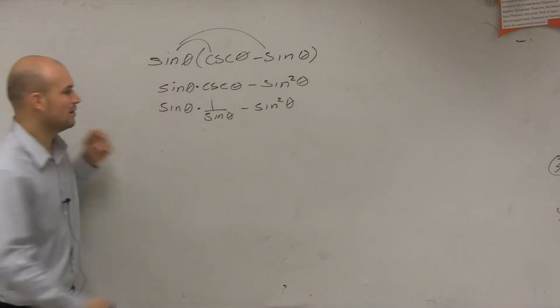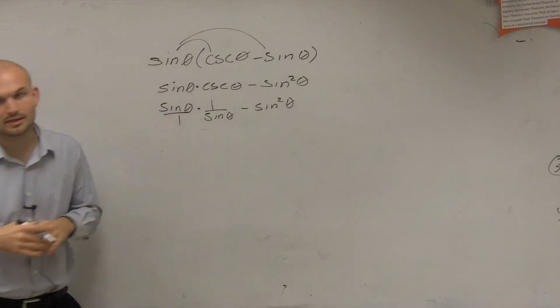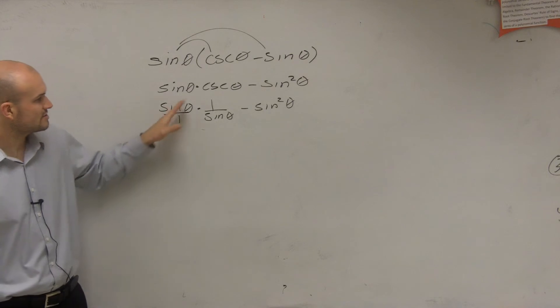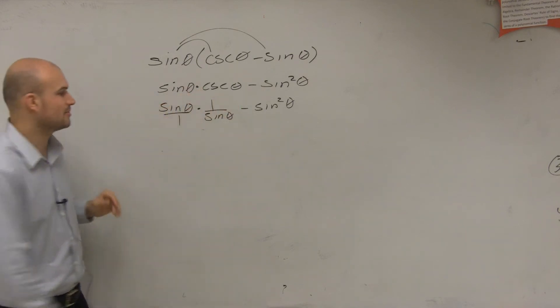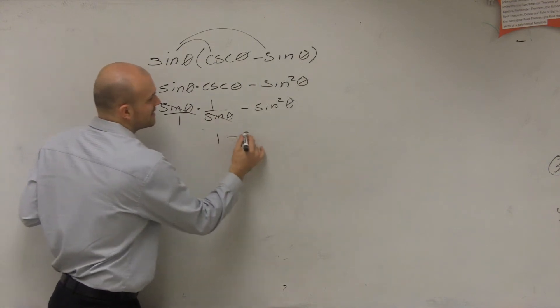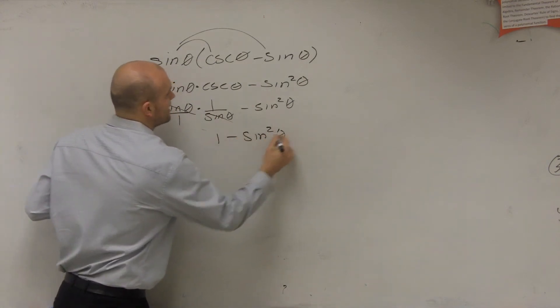Well, obviously, we know that we can rewrite this as a numerator. So sine of theta times 1 over sine of theta, that's a term multiplied by its reciprocal. Those divide out to 1. So we're left with 1 minus sine squared of theta.